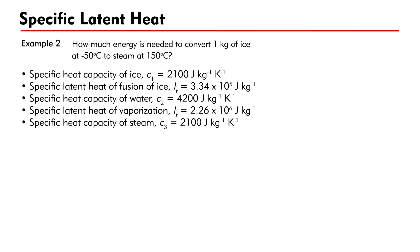The calculation involves five pieces of data: the specific heat capacity of ice, the specific latent heat of fusion of ice, the specific heat capacity of water, the specific latent heat of vaporization of water, and the specific heat capacity of steam.